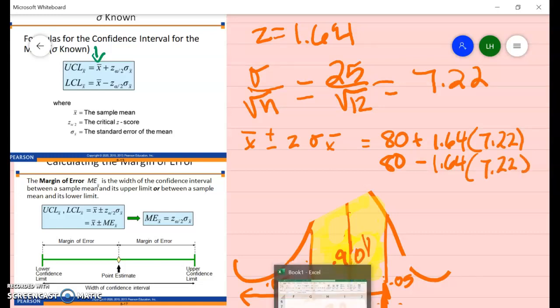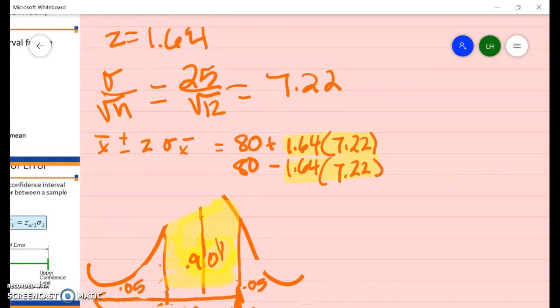Remember this little part right here. If we were to calculate that, that would be our margin of error. I'm just going to put it all in. 80 plus 1.64 times 7.22. And I get 91.84.